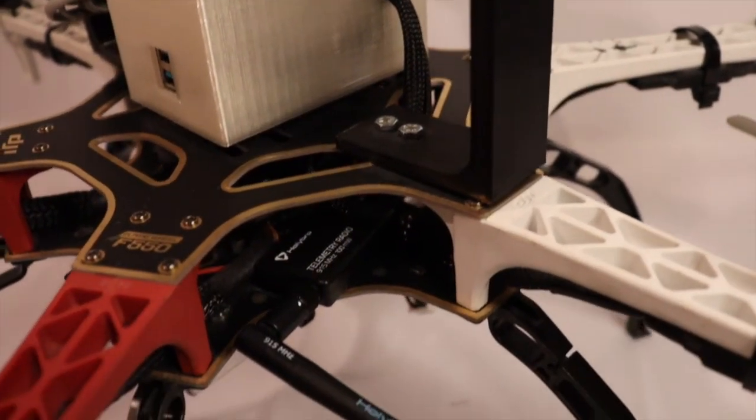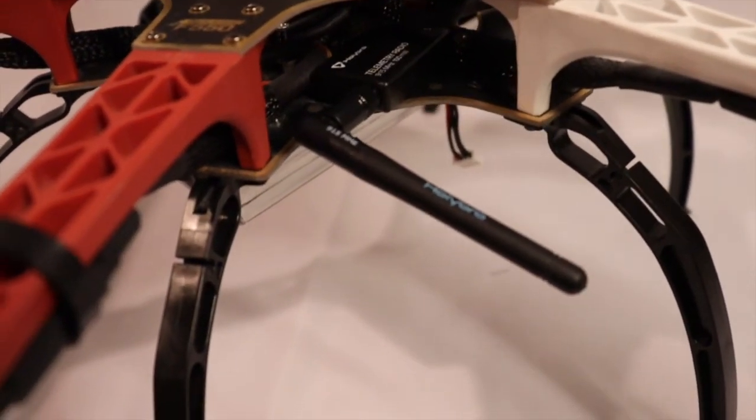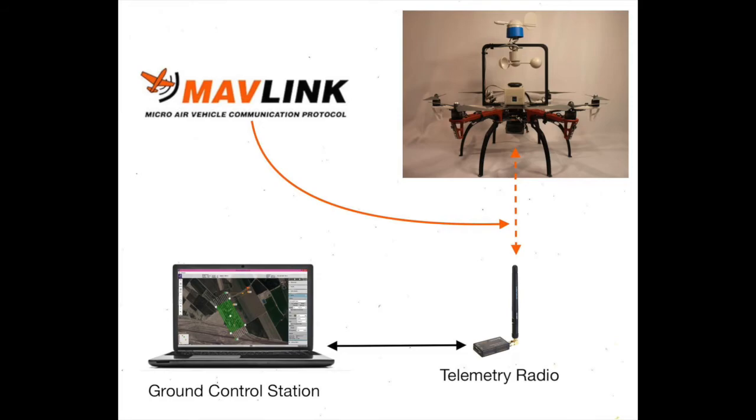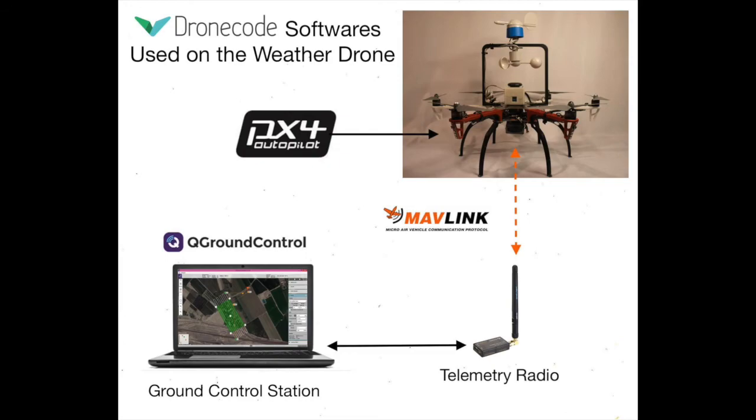A 915 megahertz Pixhawk 4 telemetry radio allows the drone to communicate with the ground control station via a wireless Mavlink connection. The Mavlink communication protocol is another project maintained by the Drone Code Foundation.